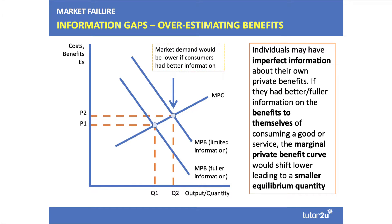When it comes to analysis diagrams, it's important to use cost and benefit diagrams. In this first situation, individuals may have imperfect information about their own benefit of consumption. With limited information they would consume quantity Q2, but with fuller information — perhaps realising the product isn't as good as they thought — the marginal private benefit curve would shift lower and to the left, and consumption would fall to Q1. Market demand would be lower if consumers had better information.